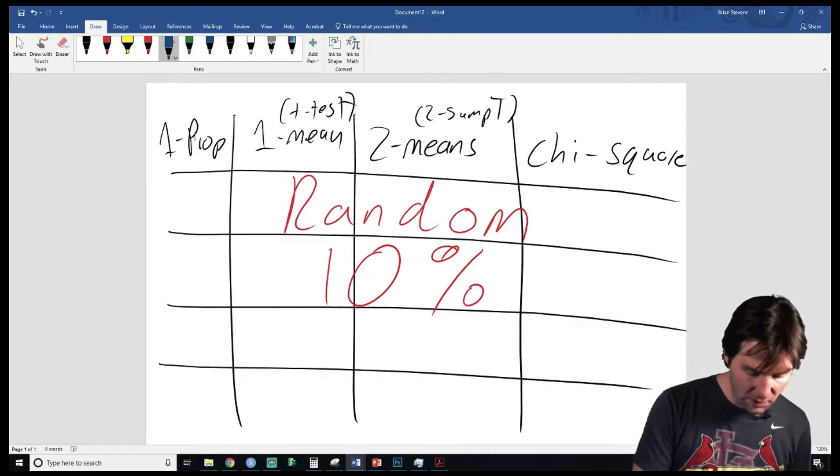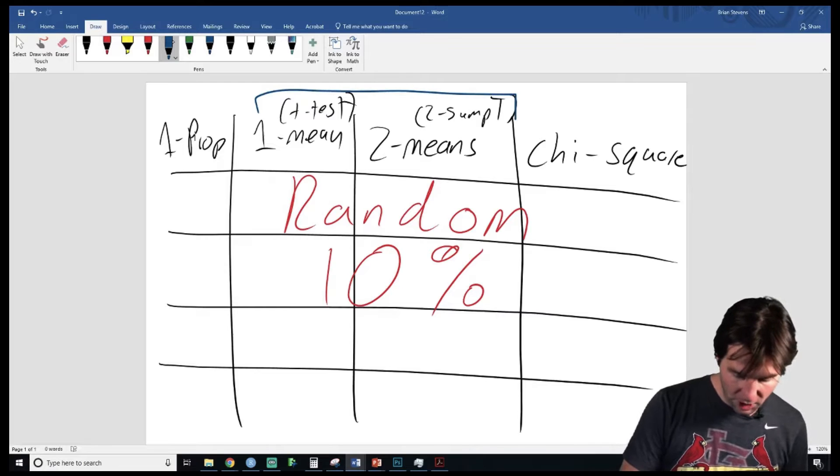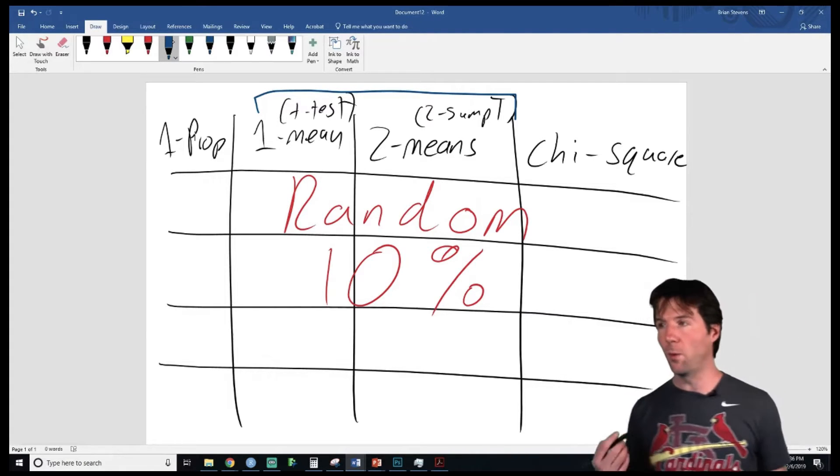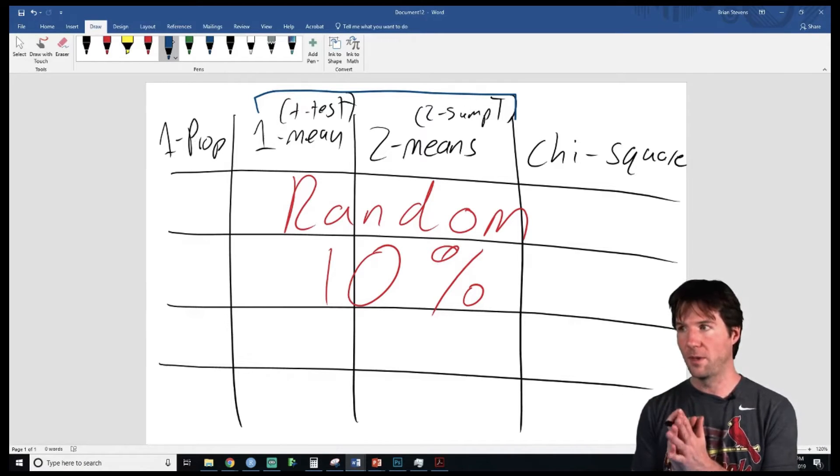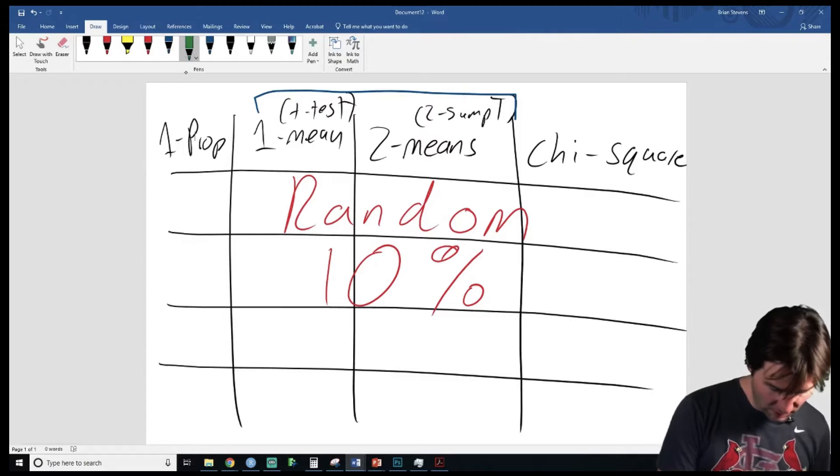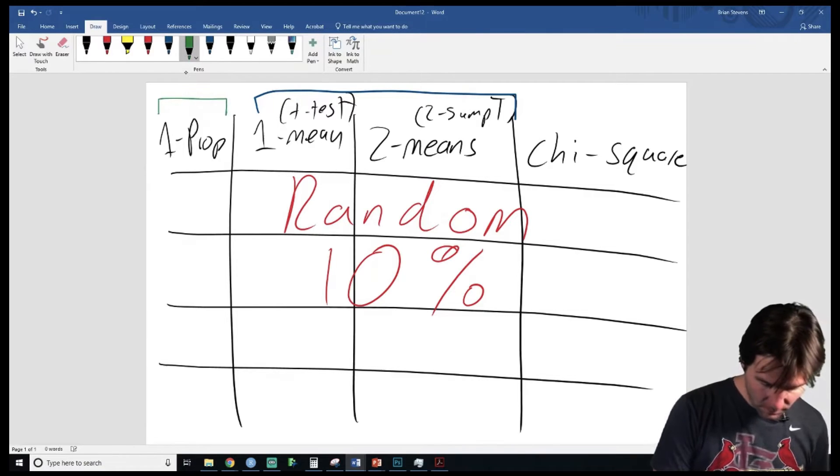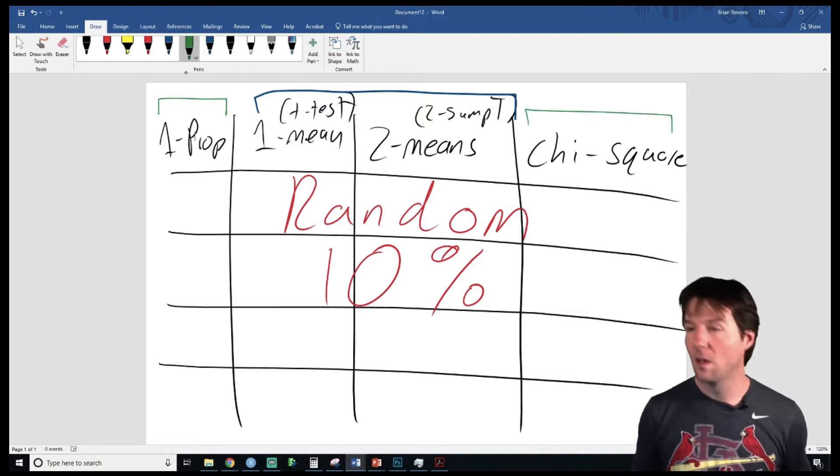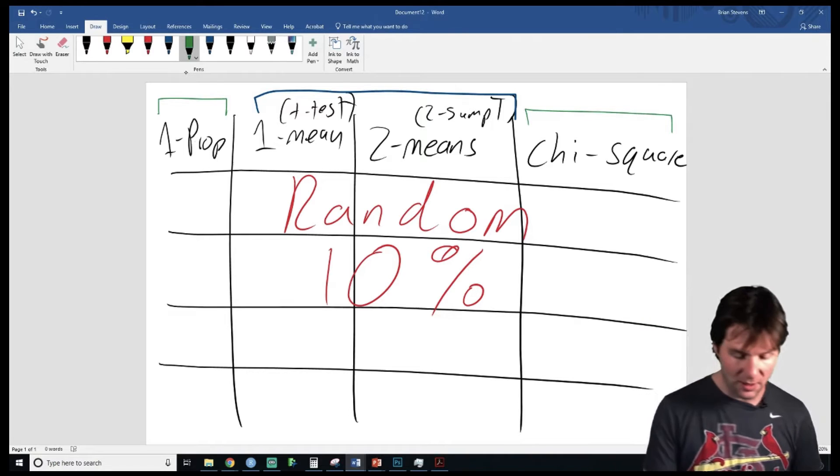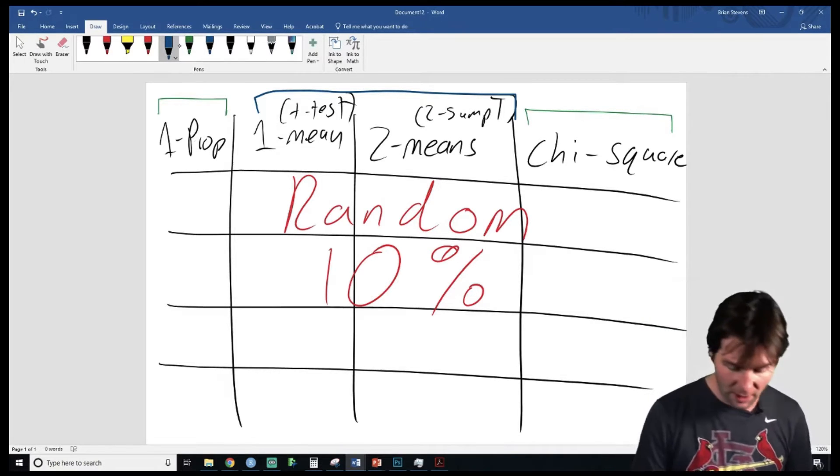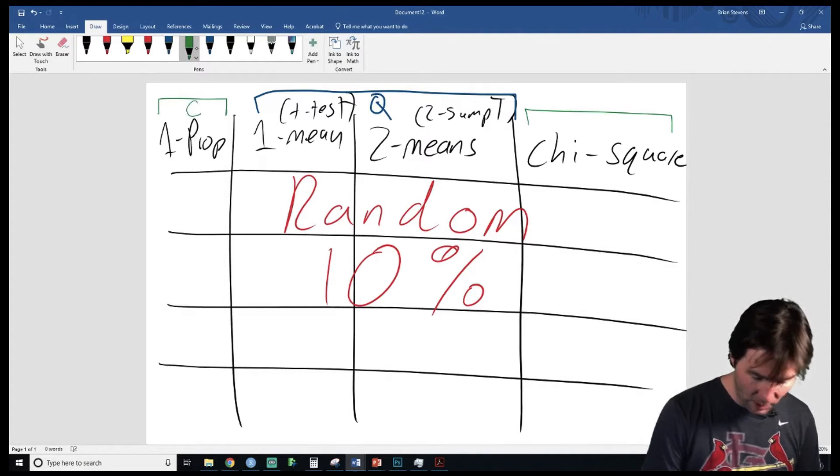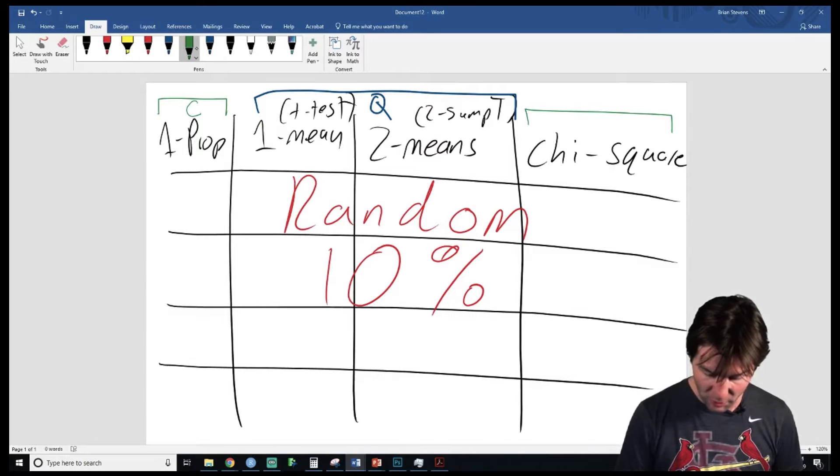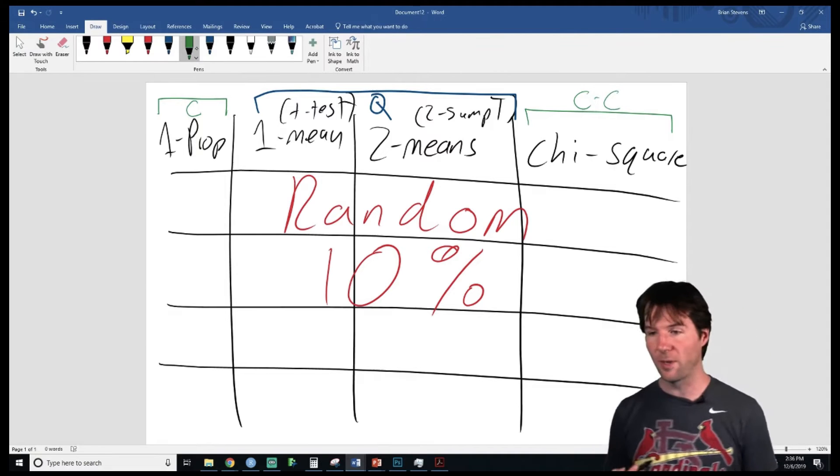I want us to notice something about these variables. Both of these tests are dealing with a what-kind-of-y variable. Let's differentiate by color. The tests I circled with the mean tests are dealing with a quantitative y variable and a categorical x. This one is two categorical variables, categorical-categorical, which is one of our conditions.